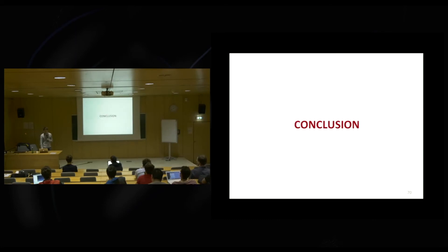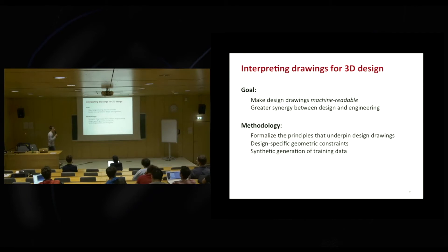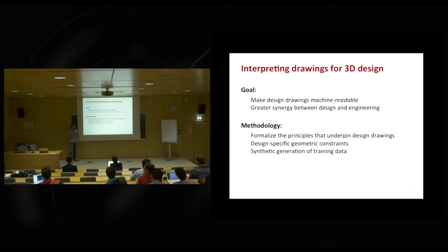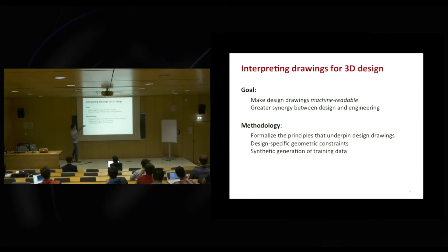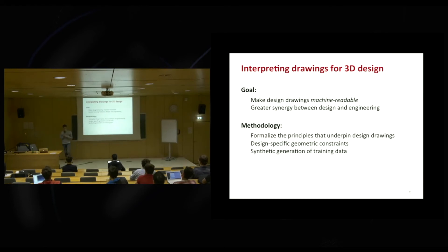To conclude, the goal of our group is to allow the interpretation of drawings by computers, in the hope of bringing greater synergy between design and engineering. The methodology is to formalize the principles that designers follow when they draw, which helps us either derive geometric constraints on the drawing and the shape it represents, or inform how to generate training data that mimics real drawings and can be used to train machine learning algorithms — with the idea that machine learning and geometric optimization can work together.